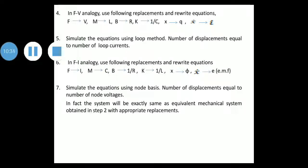Step 6: In FI analogy, use the following replacements and rewrite the equation: F → I, M → C, B → 1/R, K → 1/L, X → φ, Ẋ → E. Step 7: Simulate the equation using node basis. Number of displacements equals number of node voltages. In fact, the system will be exactly the same as the equivalent mechanical system obtained in step 2 with appropriate replacements.